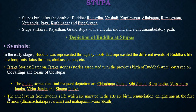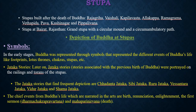In the early stage, Buddhas were represented through symbols depicting different events of Buddha's life — footprints, lotus, Dharma Chakra, Stupas, etc. In the early Mauryan period, during Ashoka's time, statues of Buddha were not made. Later, Jataka stories — stories associated with previous births of Buddha — were depicted in sculptures on railings and Toranas of the Stupa.